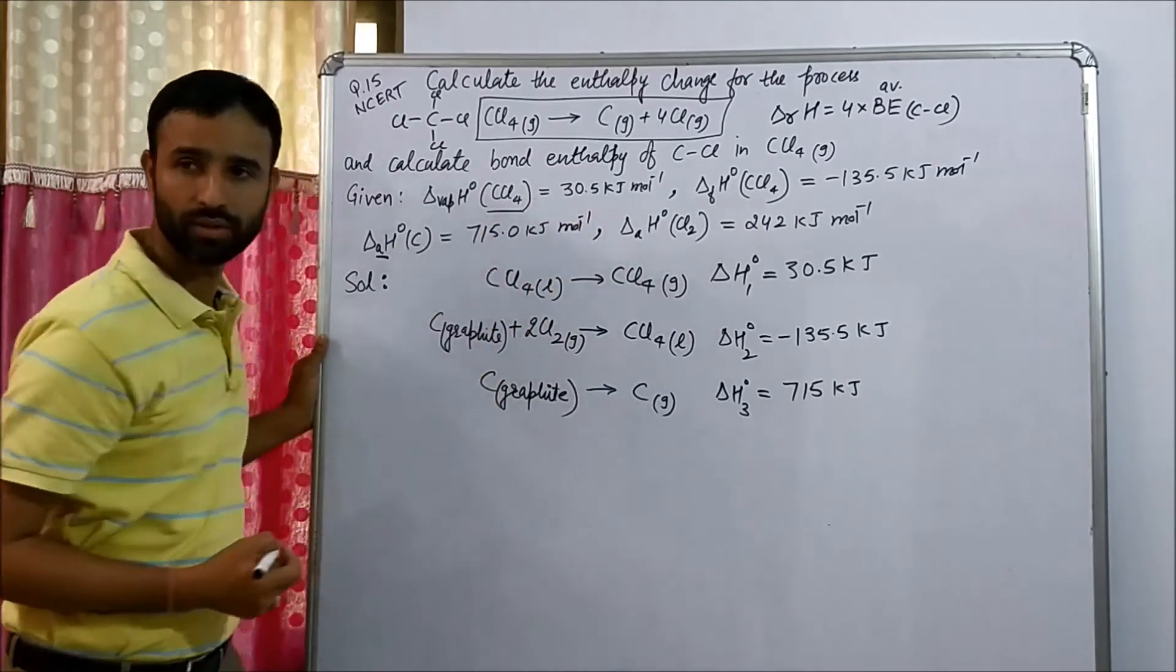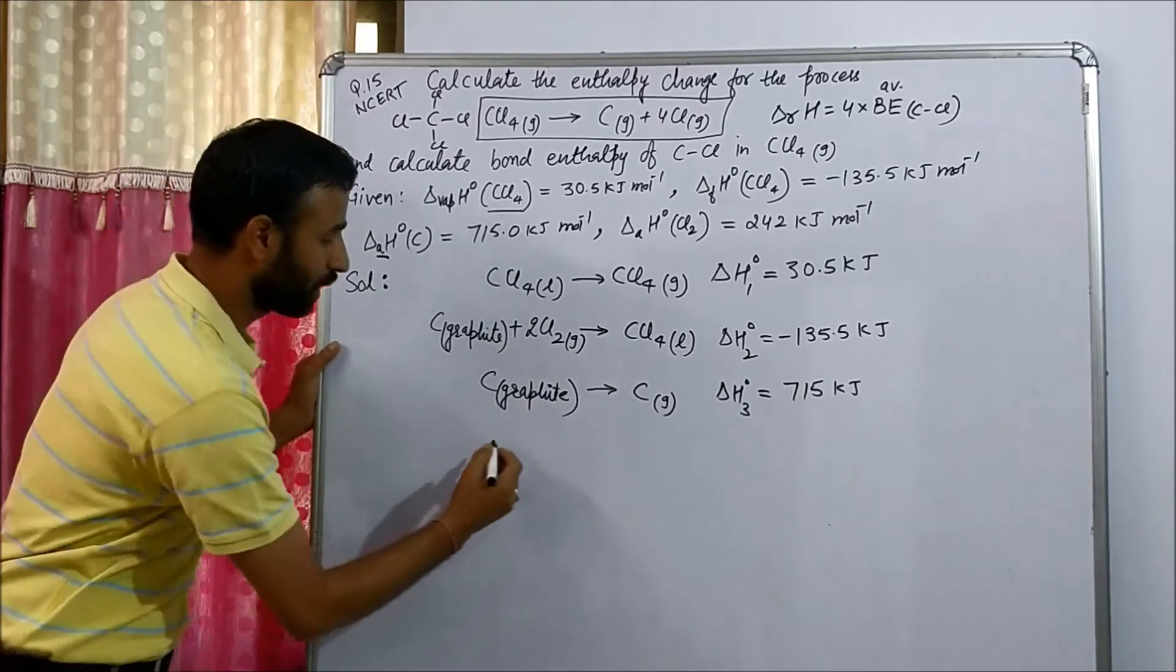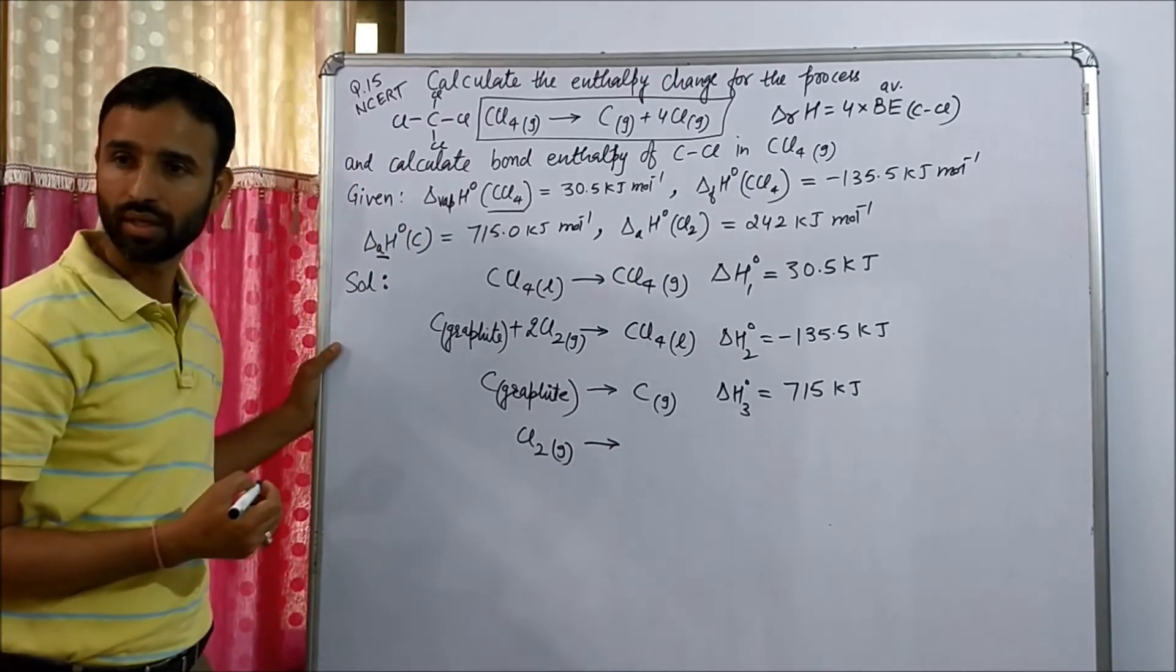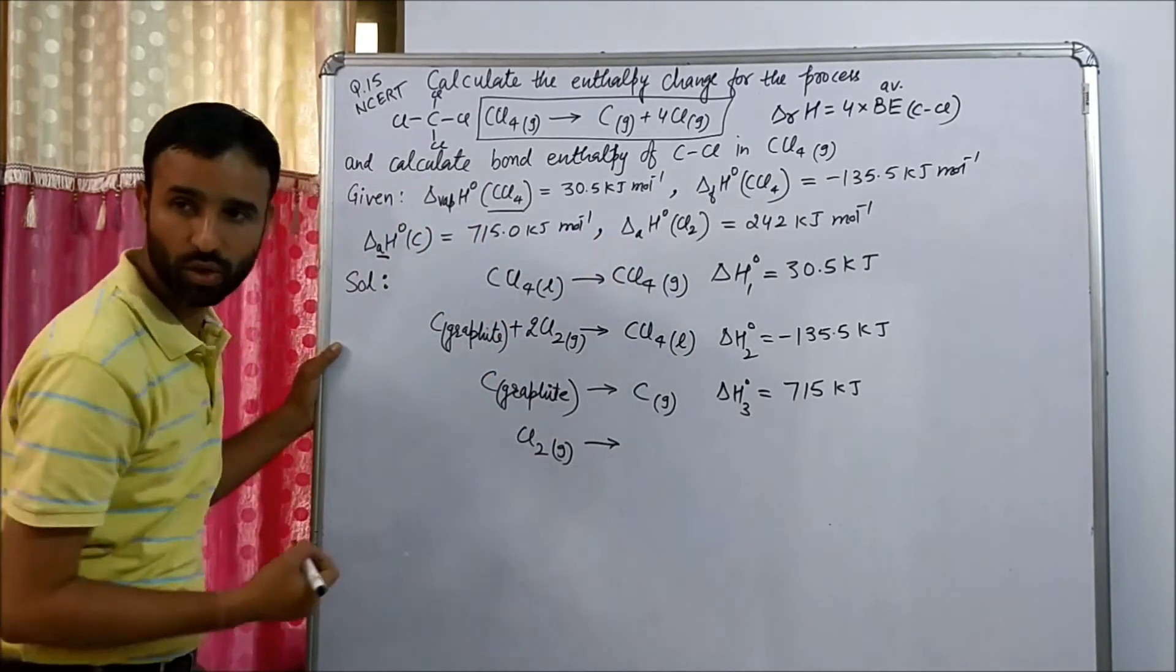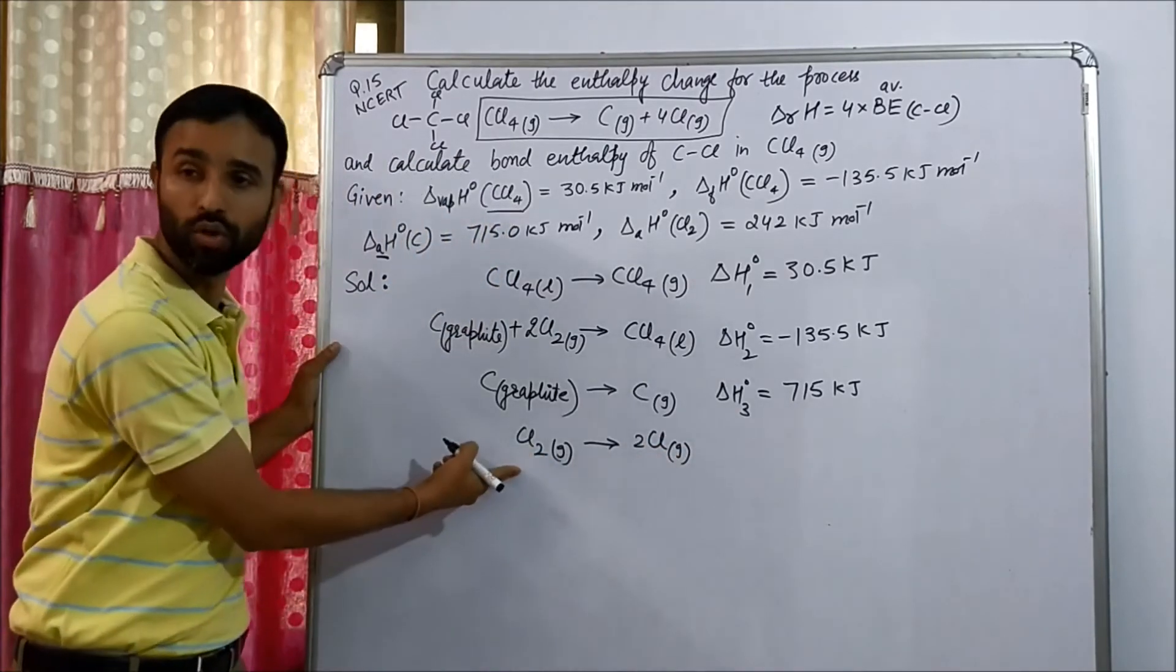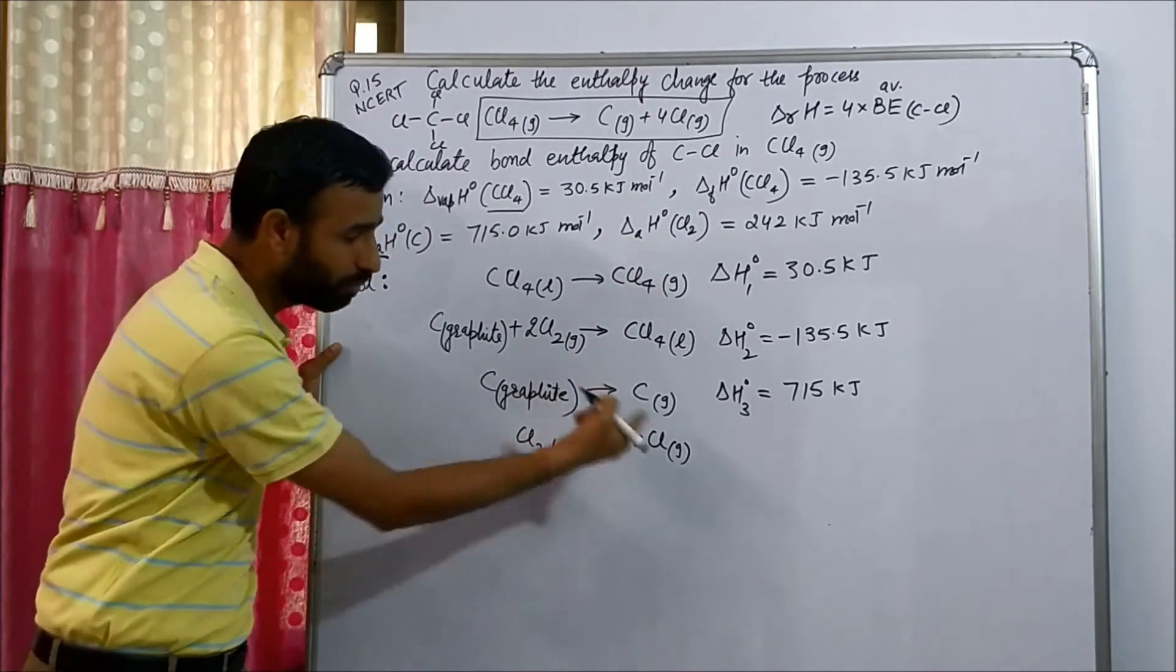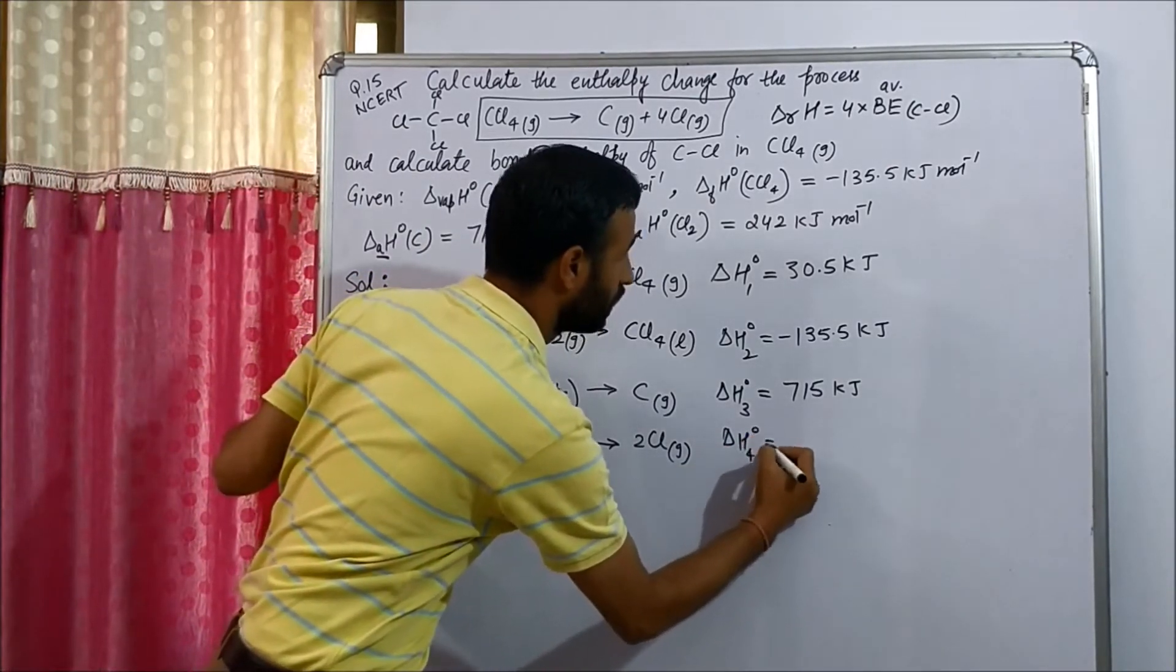Last, standard enthalpy of atomization of Cl2. So what? Cl2, standard state of Cl2 is Cl2 gas. And we can convert it into its gaseous atoms. So how many gaseous atoms are obtained? Two Cl gas. We take one mole of Cl2. Because it is enthalpy of atomization of Cl2. So one mole of Cl2 gives two Cl gas. So in this way we convert.